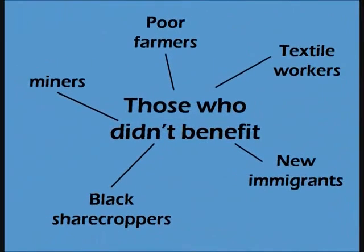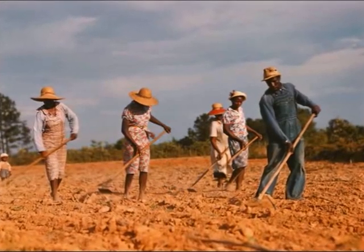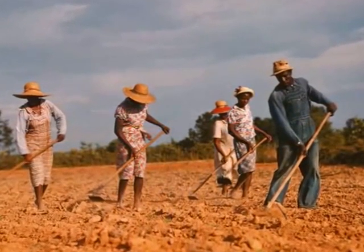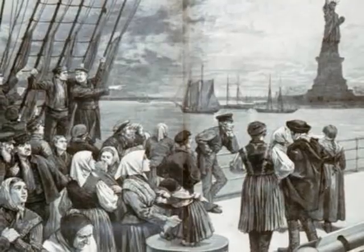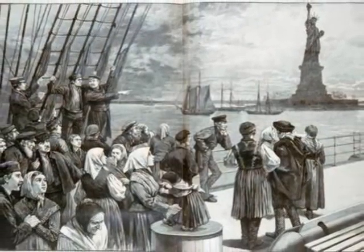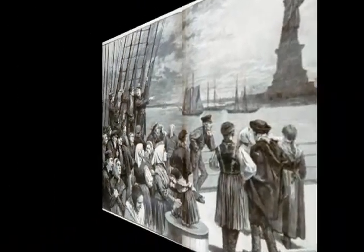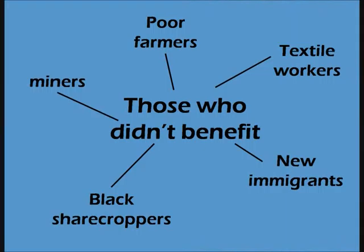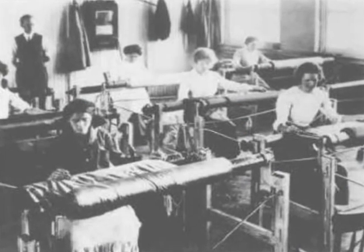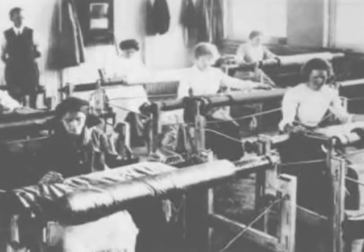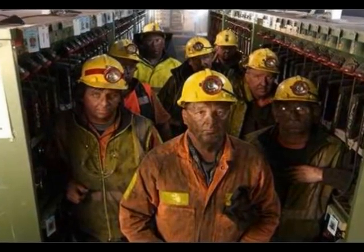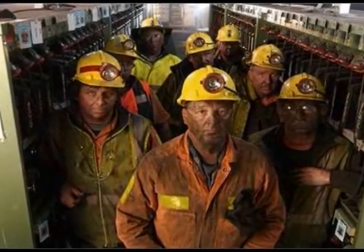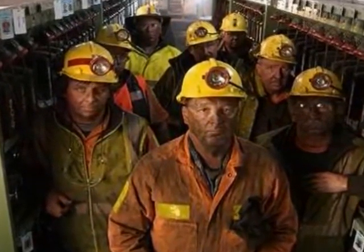Similarly, new immigrants and especially black people faced discrimination and racism, which further prevented them getting good jobs both in the countryside and the city. There is more to research about these groups, and you will need to do that by yourself. Miners and textile workers — people who in essence worked in old industries — found themselves being replaced by machines that could do the work more efficiently and for less cost to the owner.